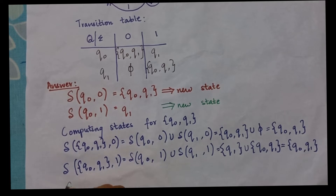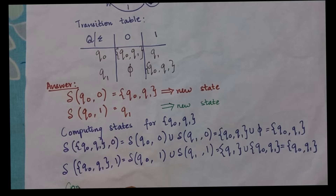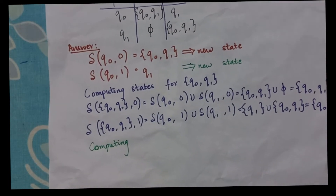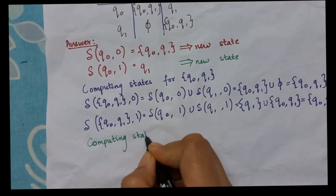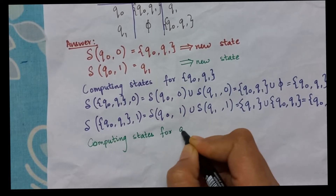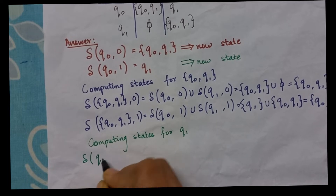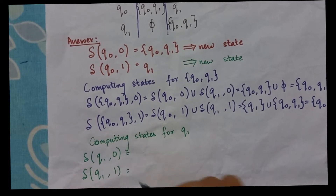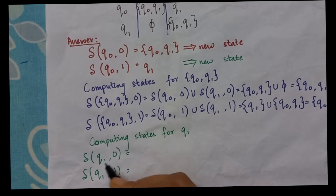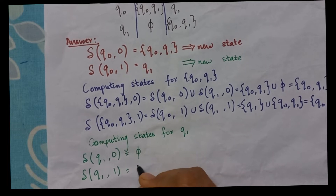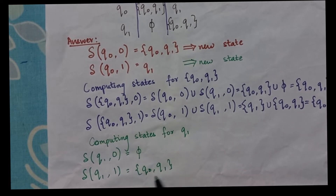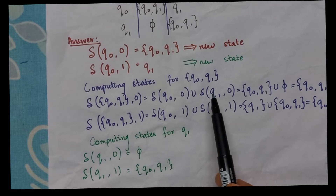Now let us move to the other new state Q1. Whichever new states get generated, I am supposed to compute for those. So I say delta of Q1 with 0 gives null, and delta of Q1 with 1 gives Q0 comma Q1. Q0Q1 is already a known state, so it is not new. I have already finished computing for Q1.